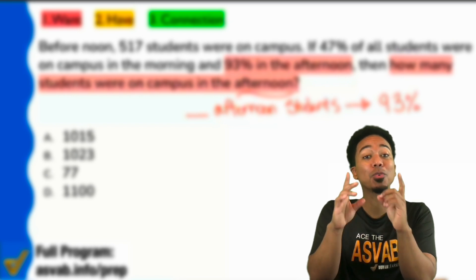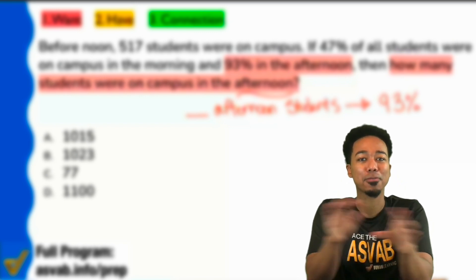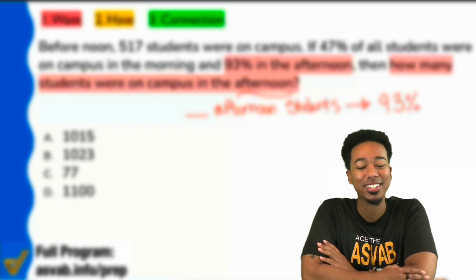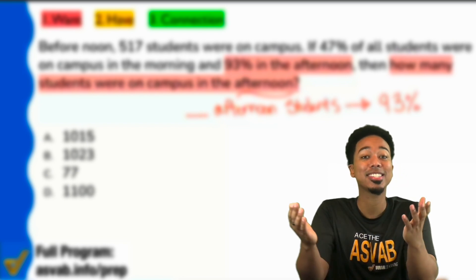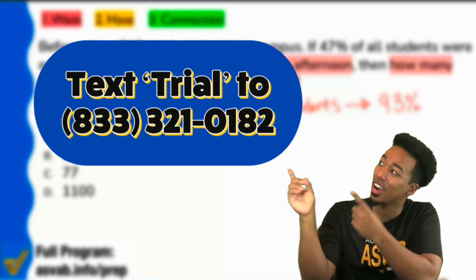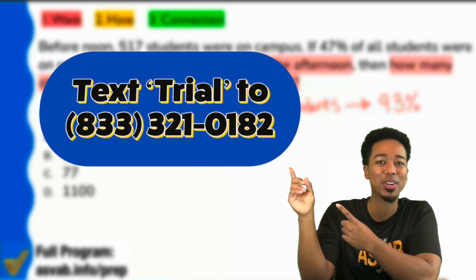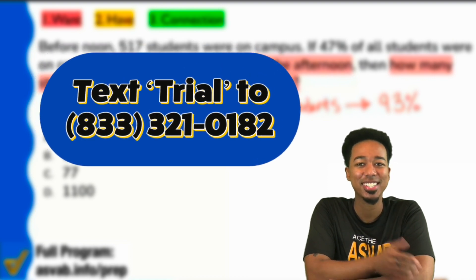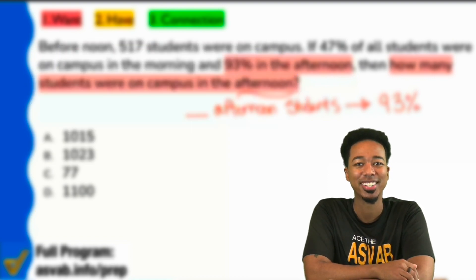Oh guess what? If you wanted to join all of our classes for a full week for free, then I highly recommend you join our full program trial. No credit card required, and it's easy to join. All you need to do is text TRIAL to 833-321-0182 or check the link in the description of this video to get started. Super easy, and I hope you raise your score and show you the right way.